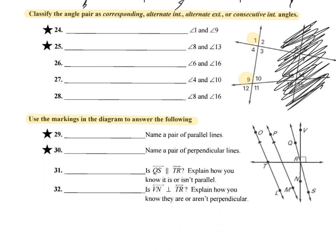Looking at angles 1 and 9, I ask myself: are they interior, exterior, or both? Are they on the same side or different sides? I notice I have one interior angle and one exterior angle, and they're both on the left. That makes those angles corresponding. Remember, corresponding angles are the angles that make the letter F — when I trace them, those are corresponding angles.